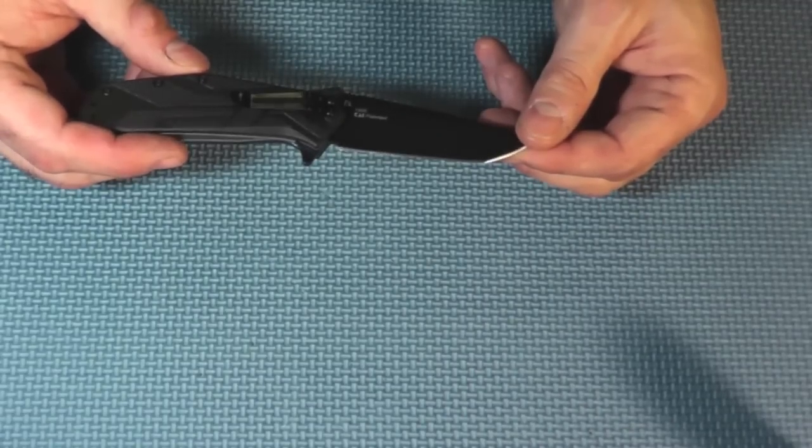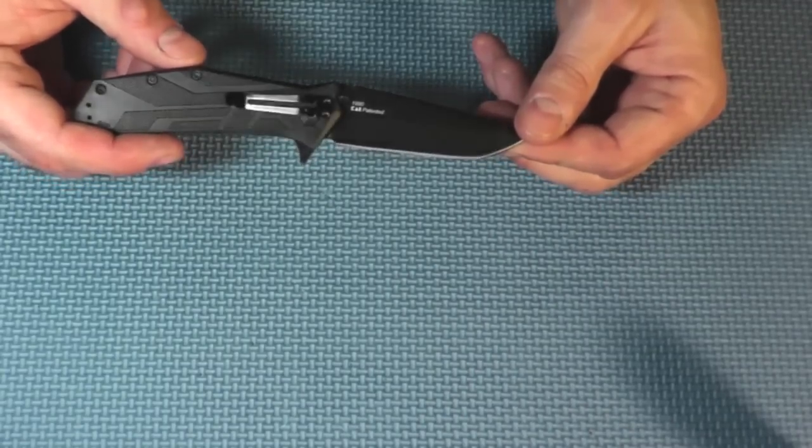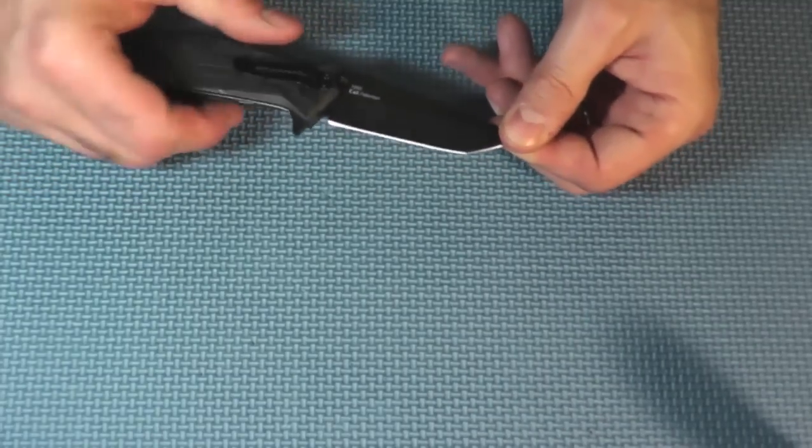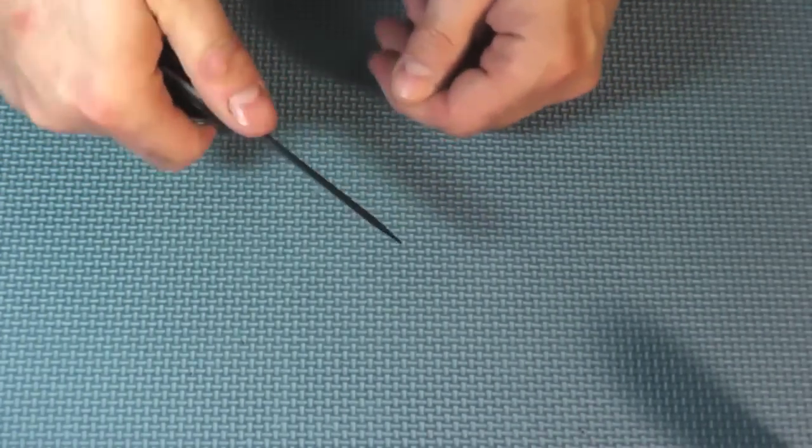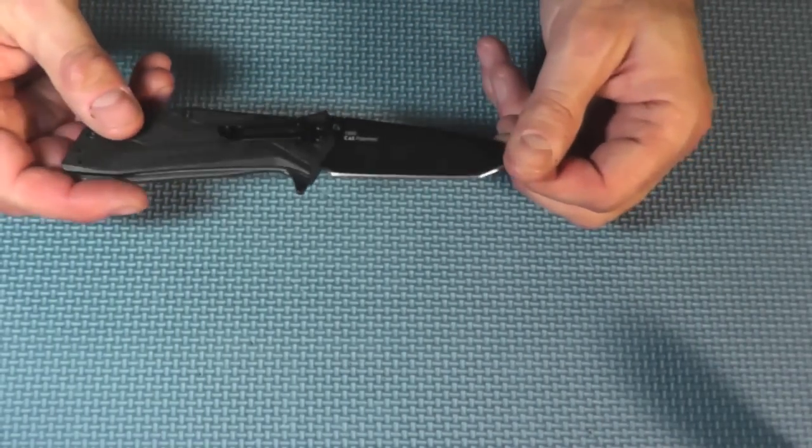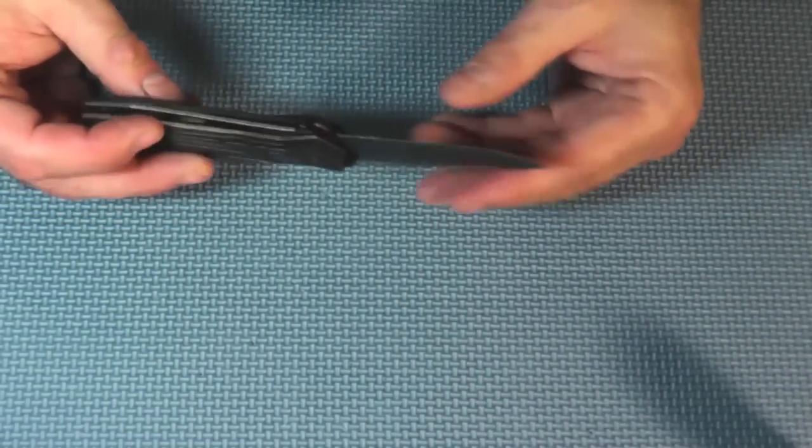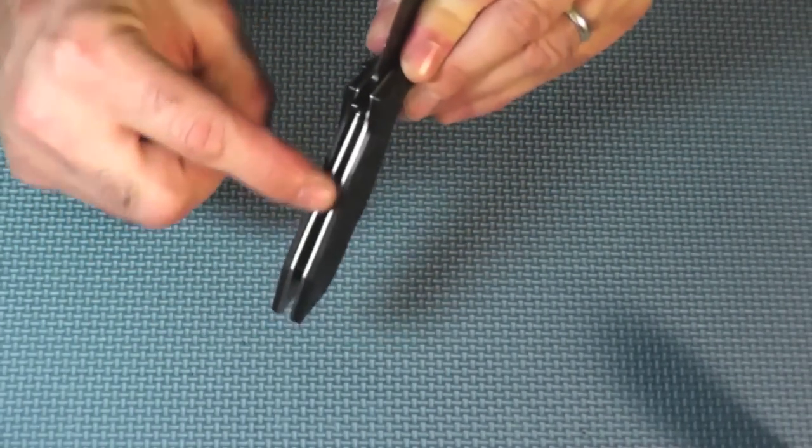On the Rockwell hardness scale, it's about a 58 to 59. So, it could be a little brittle. You know, I wouldn't do, like, jobs like try to put this in here and turn screws or anything like that. You'll probably chip it or break it.